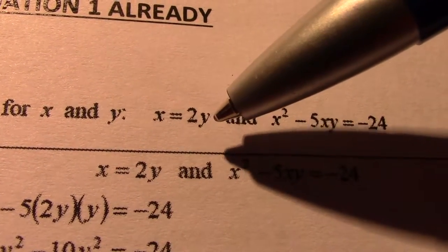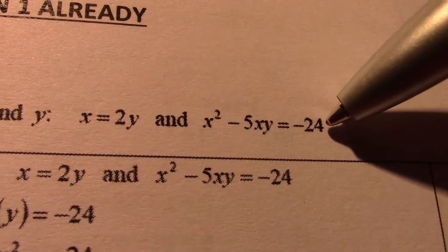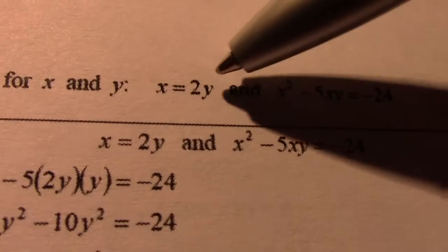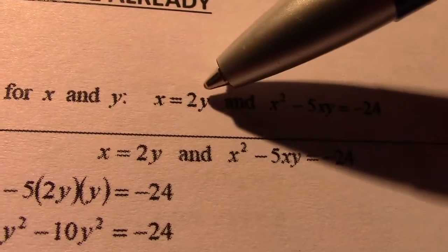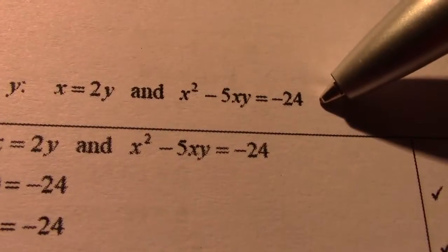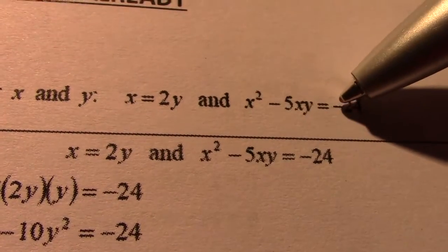First one I have, x equal 2y. Second one, x squared minus 5xy equal negative 24. So there I already know that x is 2y, so that I call equation 1, thus I call equation 2. So now wherever I see x, I'm going to substitute in 2y.